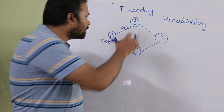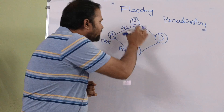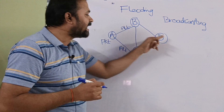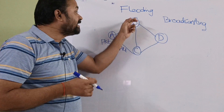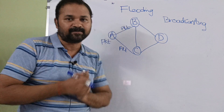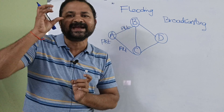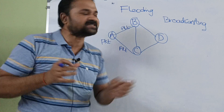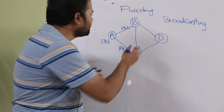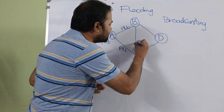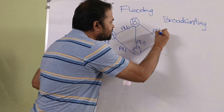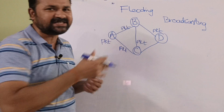B's neighboring routers are A, C, and D, but B received the corresponding packet from A. So now B doesn't transmit that packet back to A. B will transmit the packet to C as well as D. This is what flooding is.